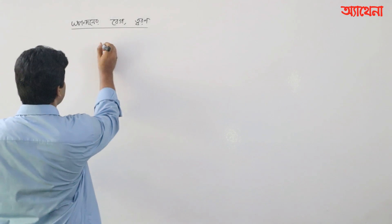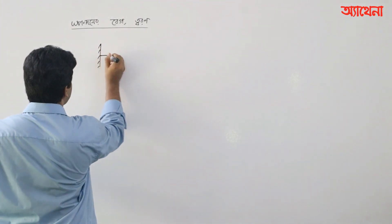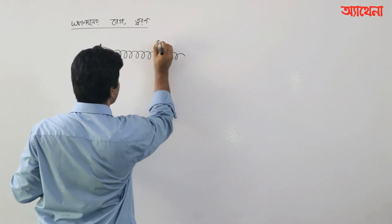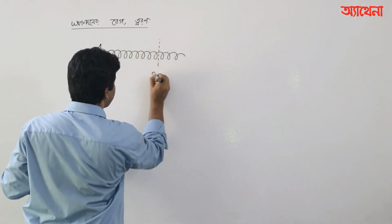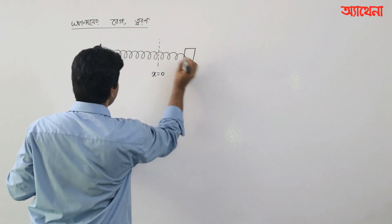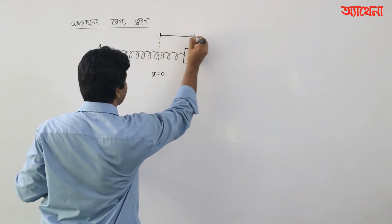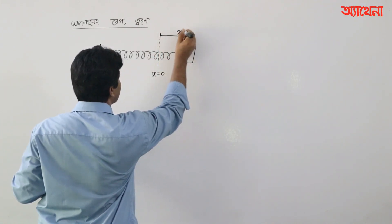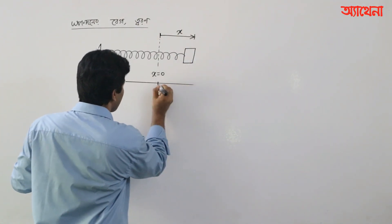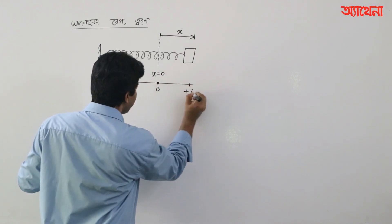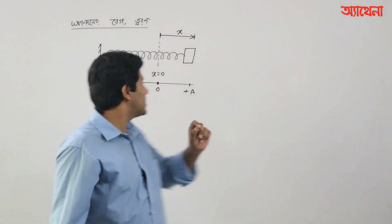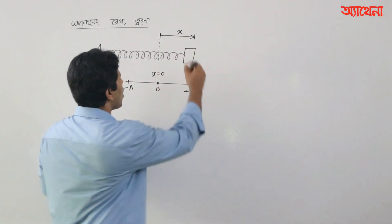We have to look at the spring, and the spring is just the same — that means x is equal to 0. And the second thing we have to look at is x. So, x is equal to 0, and the second thing is also equal to 0. We have to check whether it is equal to 0.